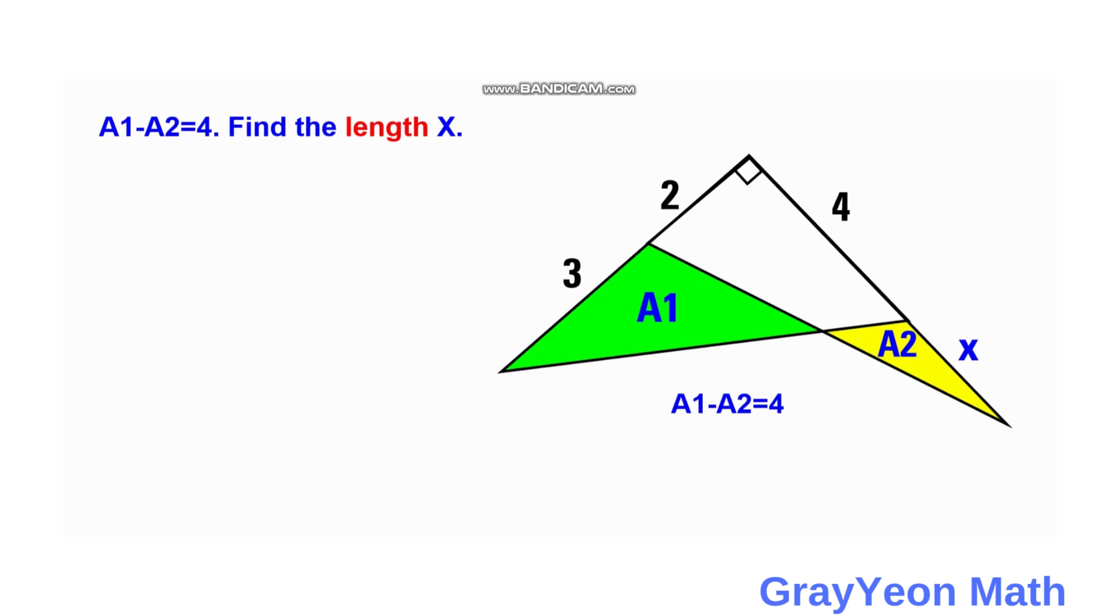If we focus on this white region, we can write the equation. Area 1 plus the white region is equal to one-half times 4 times (2 plus 3). That is Area 1 plus W, where W represents the white region.